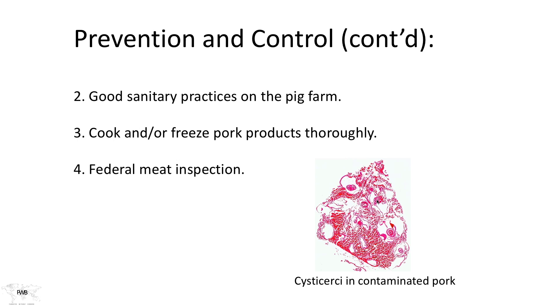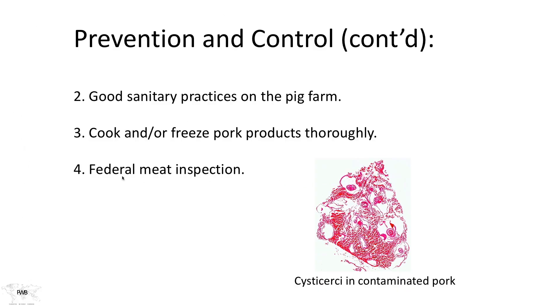An example of that meat is shown here. Each one of these is a cysticercus that resulted from the ingestion of multiple eggs. Remember, each one of these gravid proglottids contains over 1,000 eggs each. As a result, there could be many cysticerci in the tissue of an animal even if it only ate one proglottid. Federal meat inspection also stops the infection at that point by identifying animals that are infected and discarding them, thereby preventing the meat from reaching consumers.